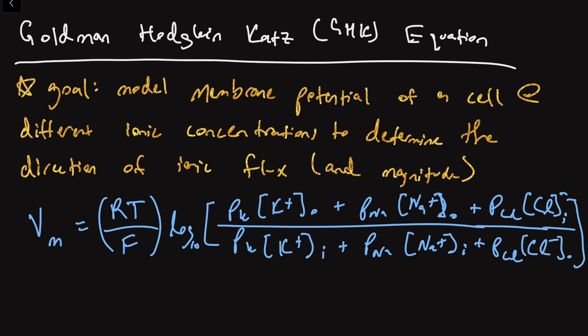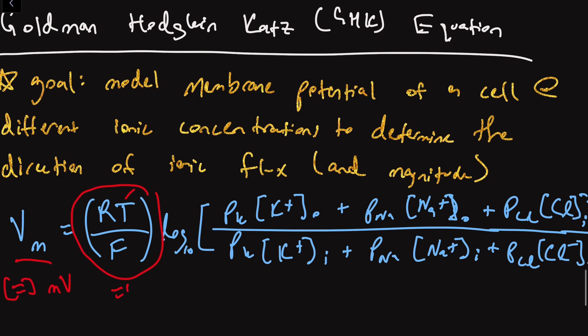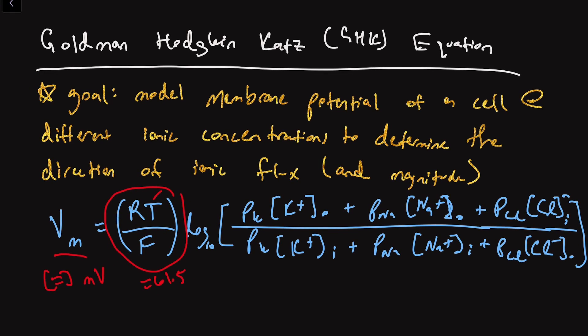I've written out the Goldman-Hodgkin-Katz equation in light blue here. V_M, which has units of millivolts, is equal to RT — the ideal gas constant times the temperature — divided by the Faraday constant F, multiplied by the log of the inner argument. Because temperature is usually constant inside your cells at 98.6°F, we can lump all the constant terms into the coefficient out front, and this is equal to 61.5. So all those constant terms simplify to 61.5, and we use log base 10 with that inner argument.